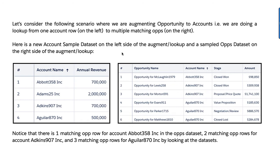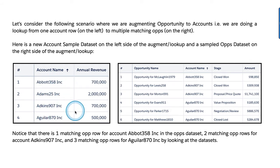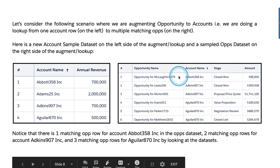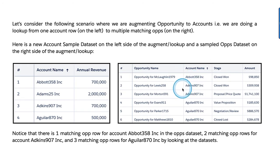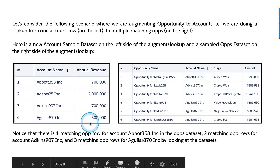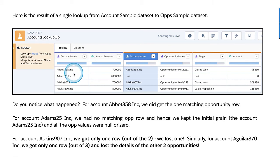Now consider a scenario where I am augmenting — adding opportunities to accounts. Say there's a requirement: I have these accounts and I want to bring the opportunities to them. From a typical SQL mindset, someone might think to start with accounts on the left. I have Abbott 358, Adams, Atkins, Aguilar — four account records. The matching opportunities on the right include: one for Abbott, nothing for Adams, two for Atkins, and three for Aguilar. One might try to do an accounts lookup to opportunity.